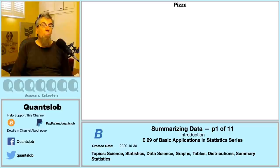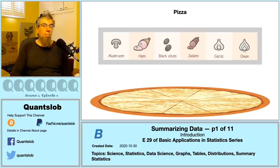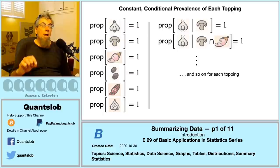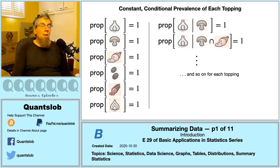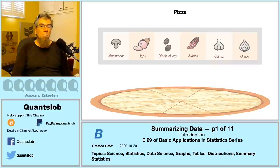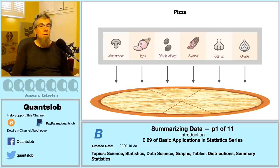The challenge is from our season three finale on counting. We have six available pizza toppings and a collection of pizzas made from these six toppings such that the proportion of pizzas containing any given topping is one. The question is: what does this collection of pizzas look like? We can take a purely linguistic approach and simply convert what we know into a statement — for example, a collection of pizzas where each and every pizza contains all six toppings.